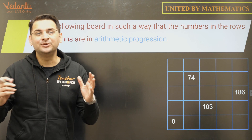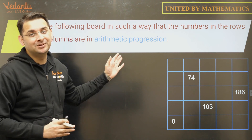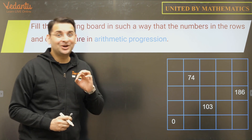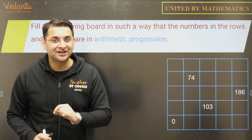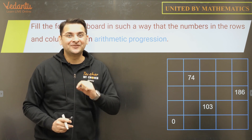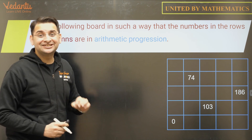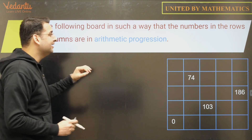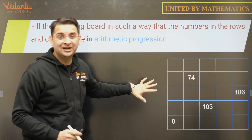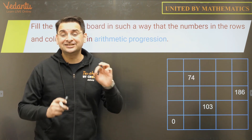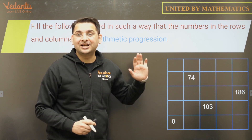Hi all, this is Abhay Mahajan and I welcome you to this series called 'United by Mathematics,' where we discuss some elegant problems. This one is not from any Olympiad but it's a very interesting question — a newer gift from my side. The question says: fill this board in such a way that the numbers in all the rows and columns are in arithmetic progression.